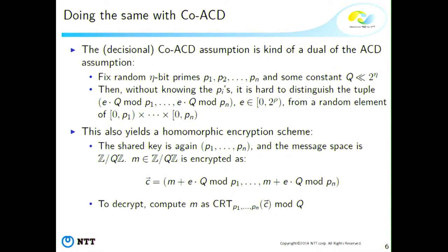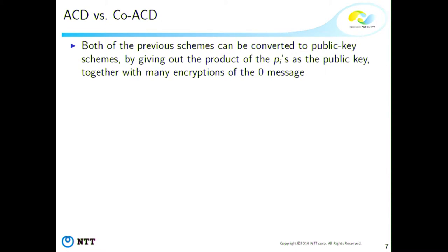Similarly, you get a homomorphic encryption scheme. To encrypt a message M less than Q, you give out the vector of (M + E·Q) mod P_1, mod P_2, …, mod P_n. To decrypt, you compute back the element modulo the product using the Chinese Remainder Theorem, then reduce modulo Q to retrieve M. These schemes are similar in many aspects — they are symmetric key schemes that you can convert to public key by giving out the product of the P_i's and many encryptions of zero as a public key.